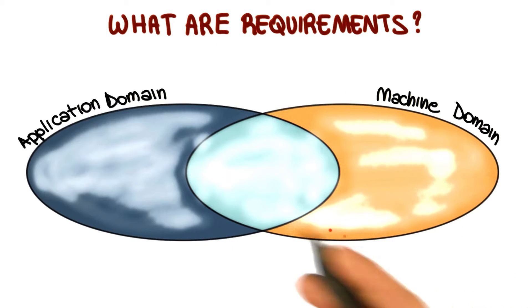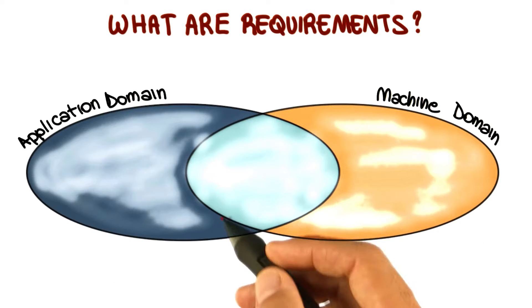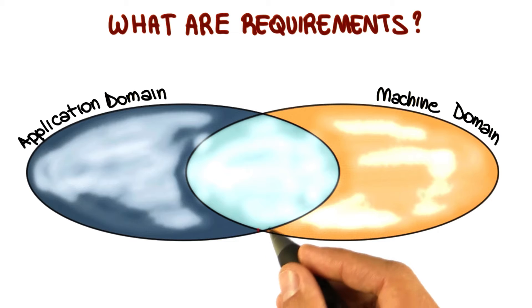To define that, I'm going to use this diagram, which is a classical one. So you might have seen it before. Discussing this diagram allows me to point out a few interesting things about requirements and define them in a better way.